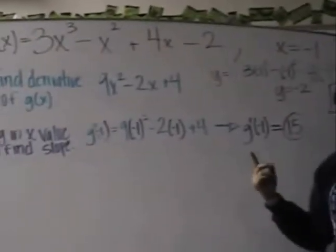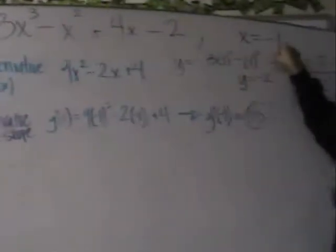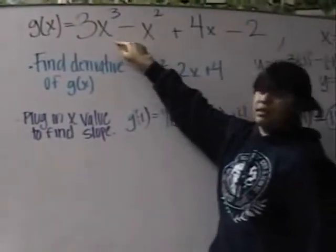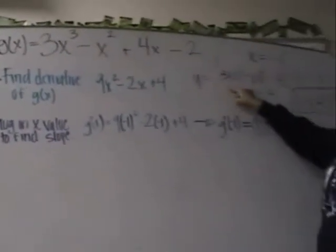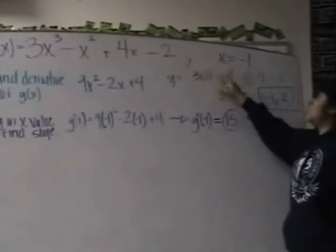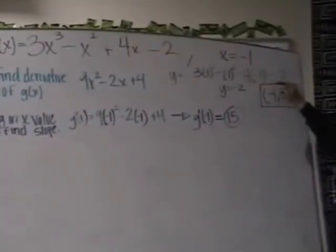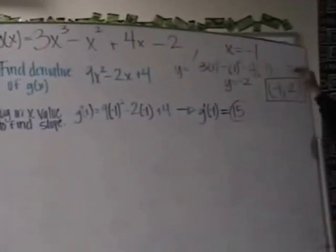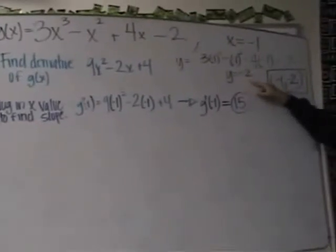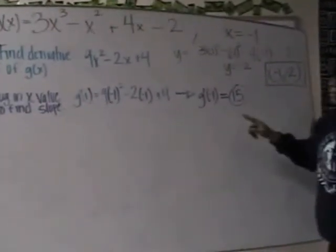So first thing I'm going to do is try to find the y. So I plug in x for this equation and I get y equals x times negative 1 cubed minus negative 1 squared minus 4 times negative 1 minus 2. And that gives me y equals negative 2. My points are now negative 1 and negative 2.